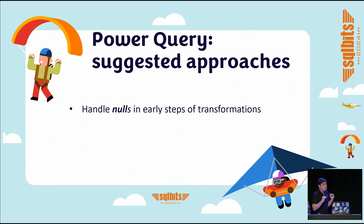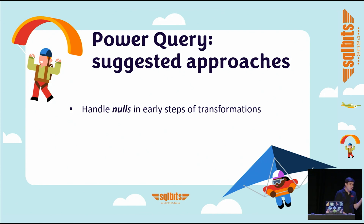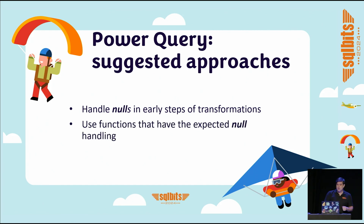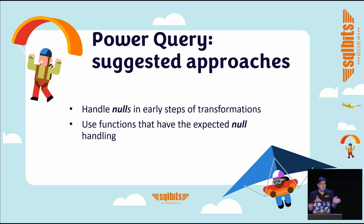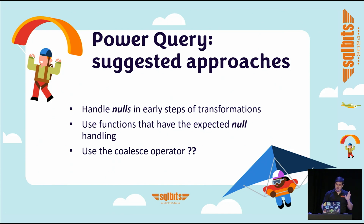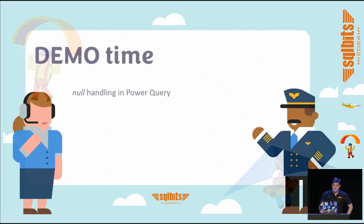How should you handle nulls in Power Query? First, handle them in early steps of your transformations. Fabric recommends a medallion architecture — you won't do this in your bronze layer, but from your silver layer onward, you should replace those nulls with something meaningful. You can use functions that handle null efficiently so the output is what you actually expect. You can also use the coalesce operator in the M language, which is the double question mark — similar to SQL's COALESCE.